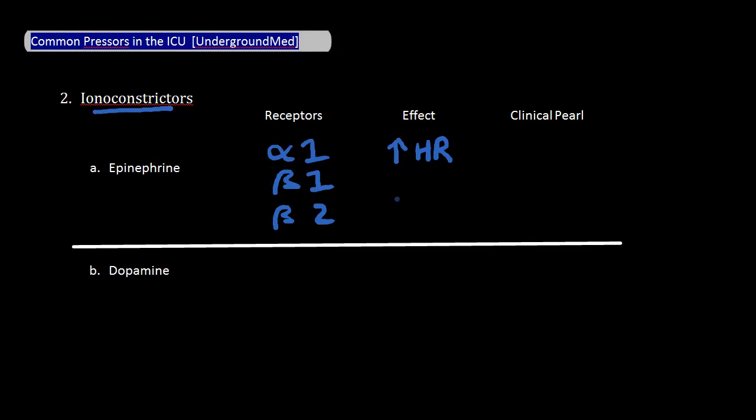As the dose goes up, you see more alpha-1 effect and get an increase in systemic vascular resistance. Because of the strong beta effects, it is prone to cause arrhythmias and is therefore usually reserved for patients failing other drugs.